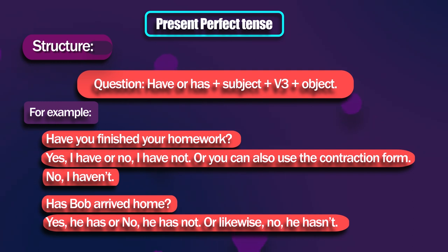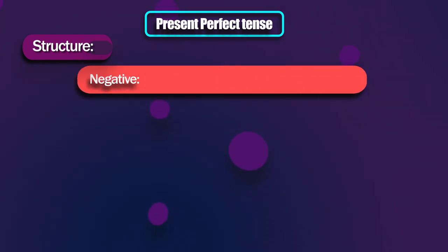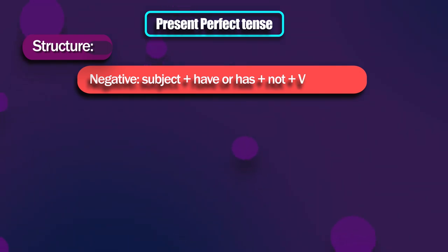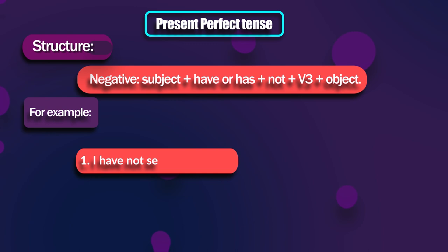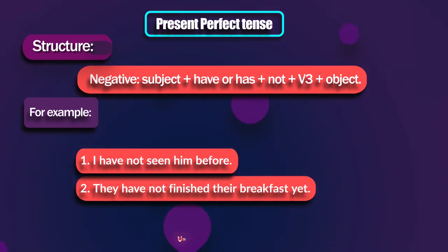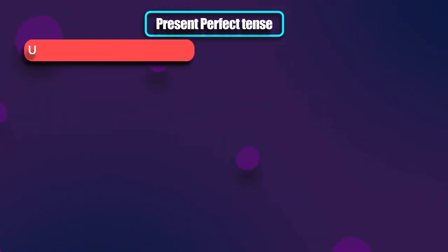In the negative form, put the subject plus helping verb 'have' or 'has' plus 'not' plus the third form of the verb, also called past participle, plus object. Simply insert 'not' after the helping verb. For example: I have not seen him before. They have not finished their breakfast yet. Notice that 'yet' can be used in the negative and question form of the present perfect.